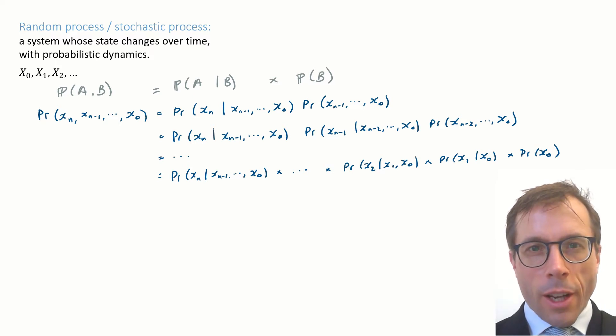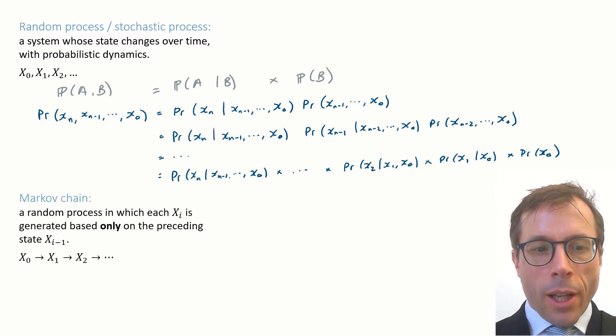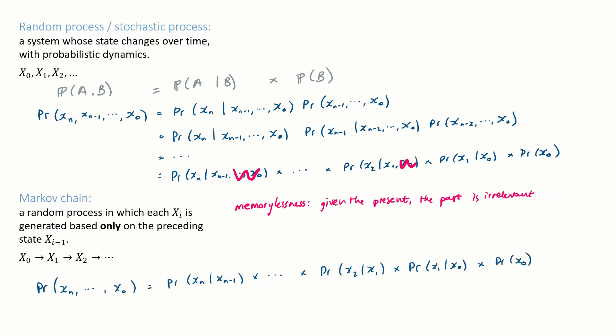Now this probably looks like an unhelpful mess, but if we limit ourselves to Markov chains, which have the famous memoryless property, then everything simplifies. Inside each of these factors, we don't need to include all the past terms.